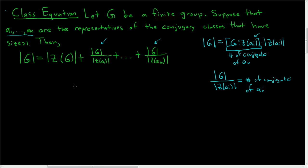So let's go ahead and prove this beautiful equation. The motivation for the proof should be reminiscent of the proof of Lagrange's theorem. When we prove Lagrange's theorem, we have cosets, which are equivalence classes under a special relation, and we write our group as a union of those equivalence classes. Well, conjugacy classes are also equivalence classes, so the goal here is to write G as a union of conjugacy classes.